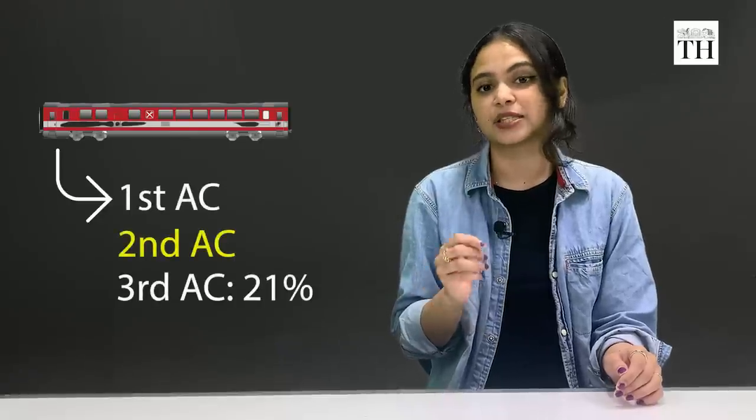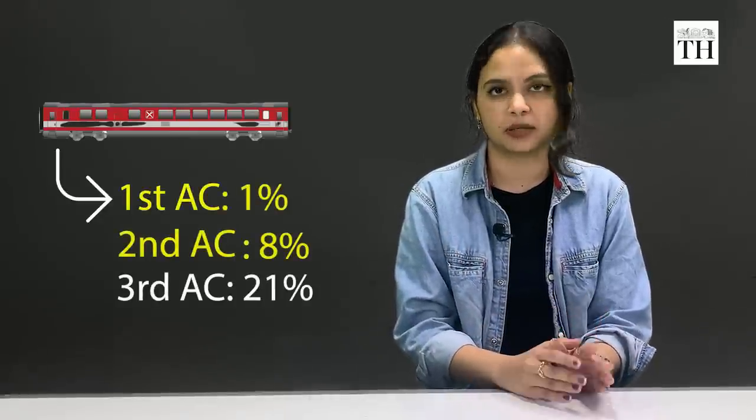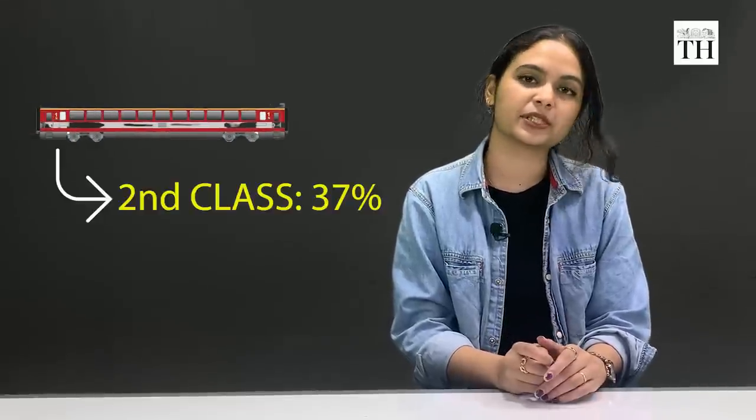The second AC forms just 8% of ticket earnings, and the first AC just 1%. The second class forms only 37% of total earnings. So that's what makes the third AC so unique.